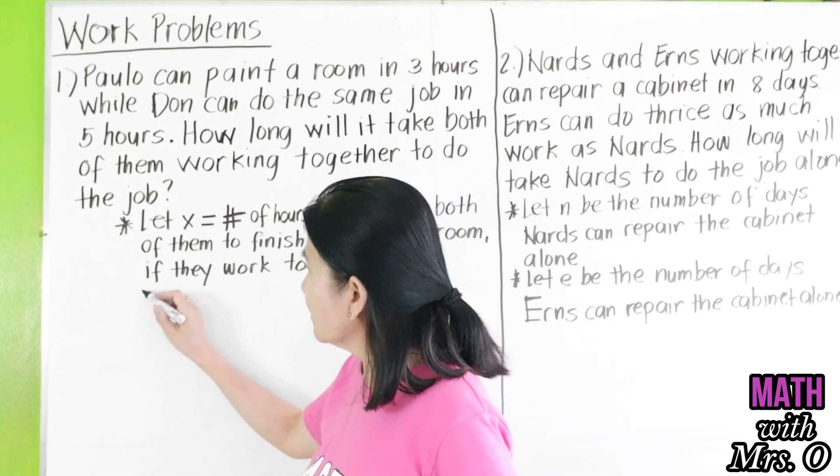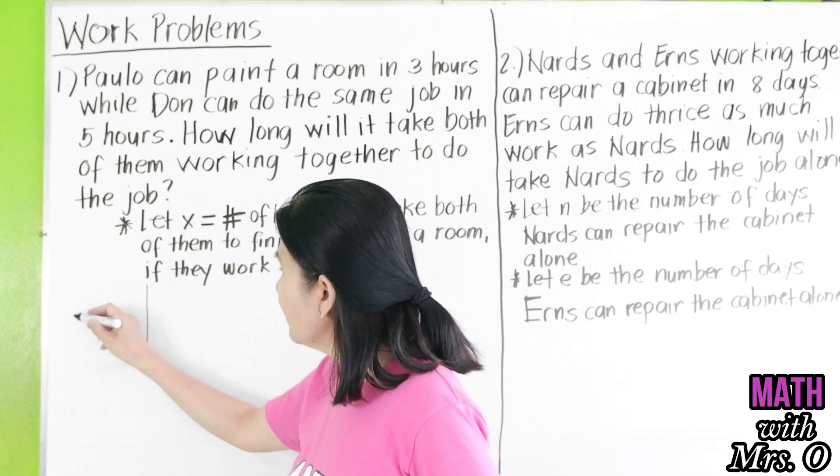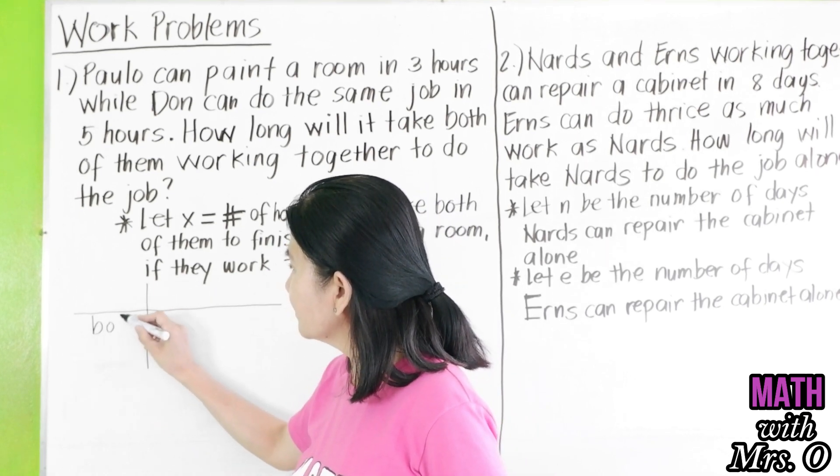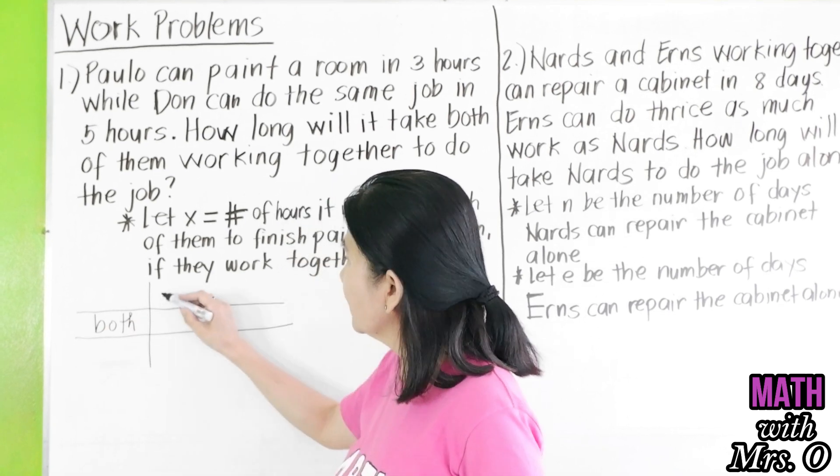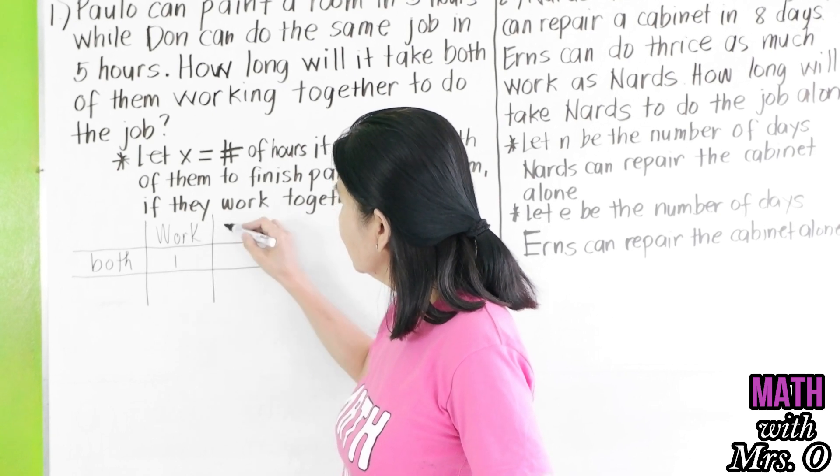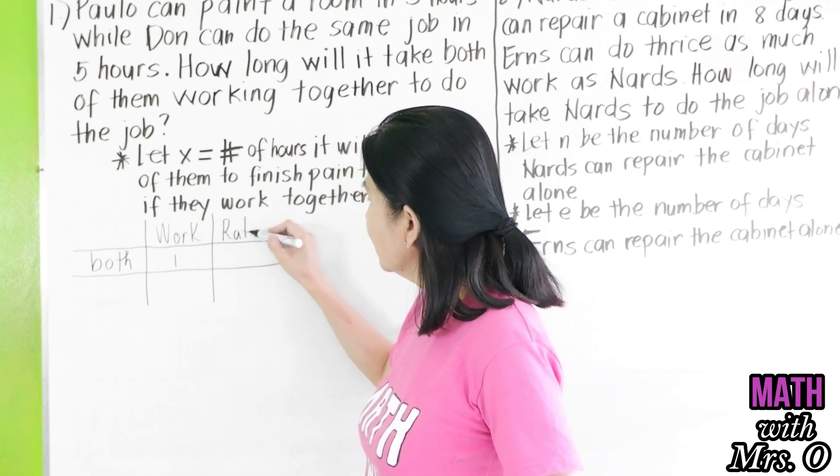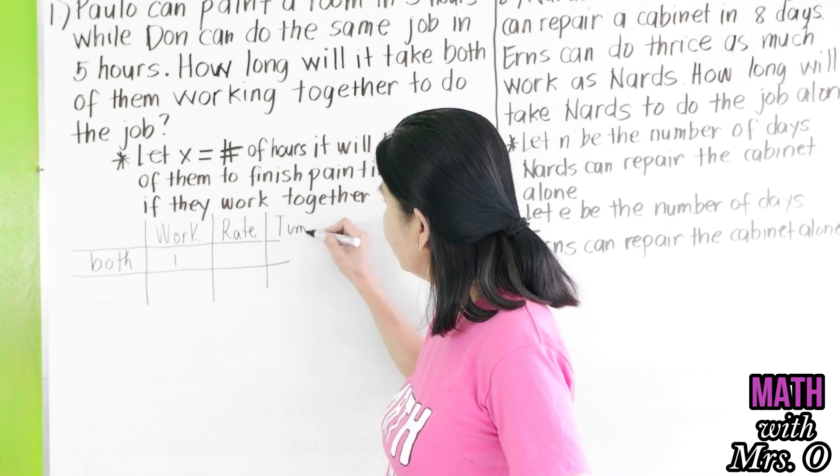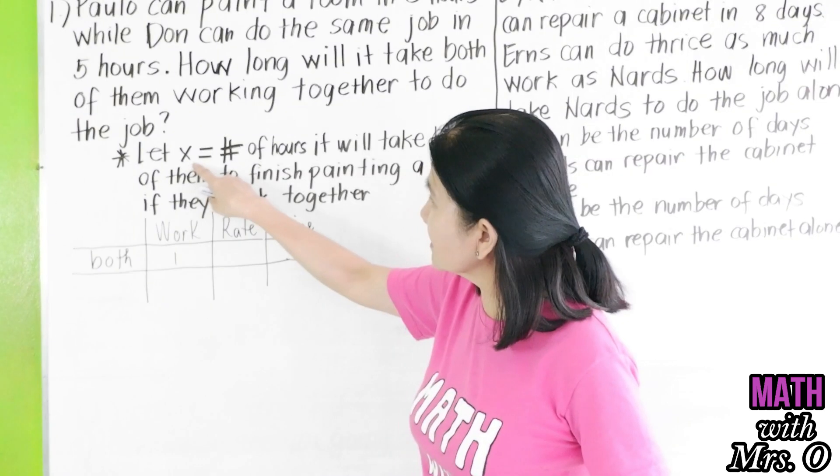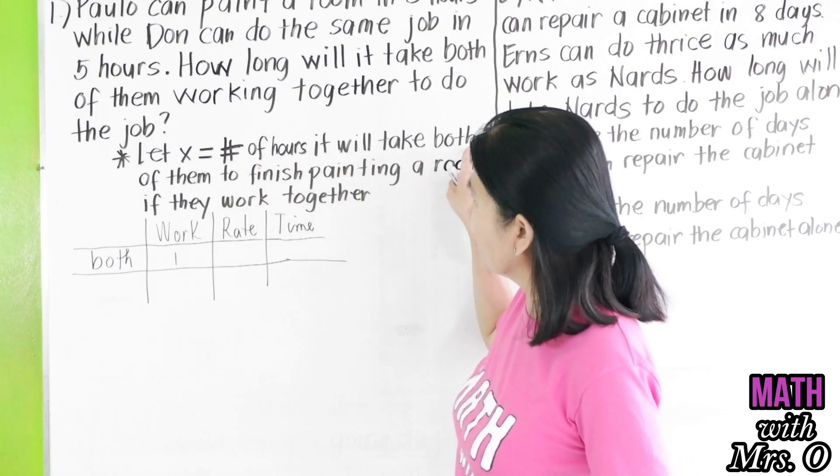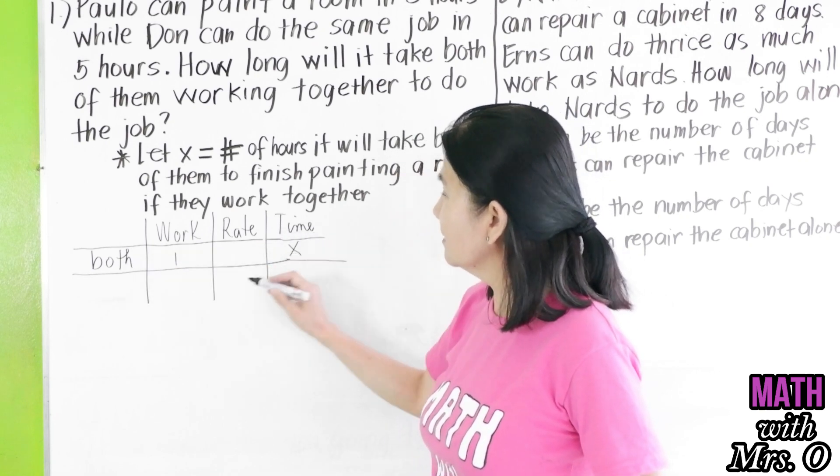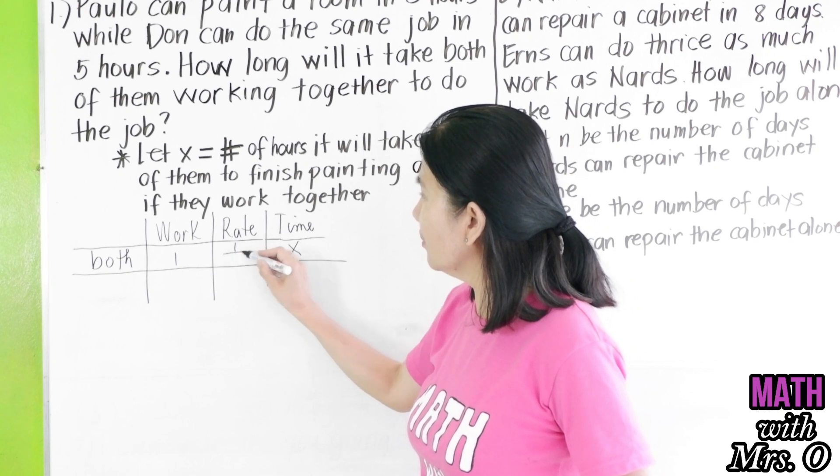So I suggest that you come up here with a table for both. You fill up the table about the work done, which is one work, the rate, and the time. It says here you let X be the number of hours it will take both. So both, this is your time X, your rate is one over X.